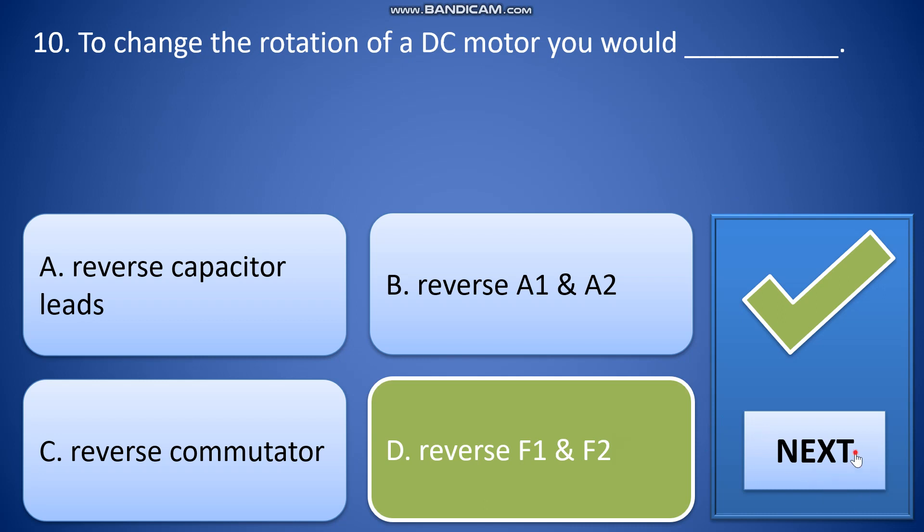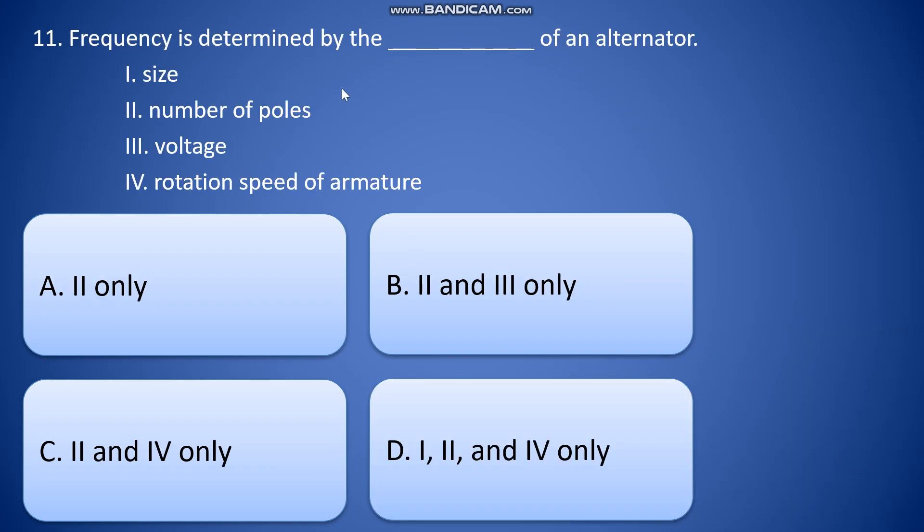Frequency is determined by the blank of an alternator: one, size; B, number of poles; three, voltage; four, rotation speed of armature.